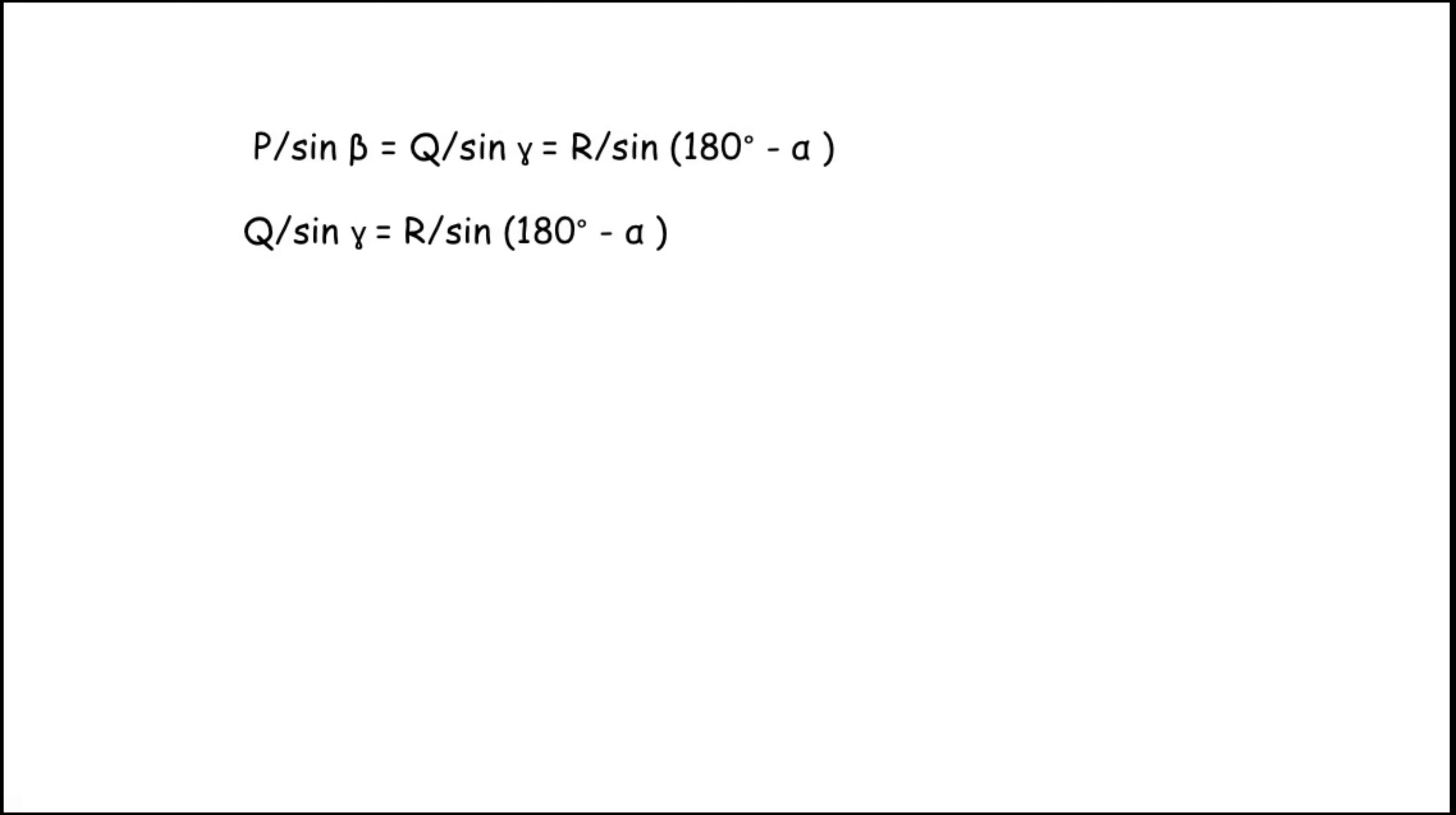Now I am transferring sine gamma from left to right, it becomes product. So Q = sin γ × R / sin(180° - α). So Q = sin 25° × 400 / sin(180° - 60°).